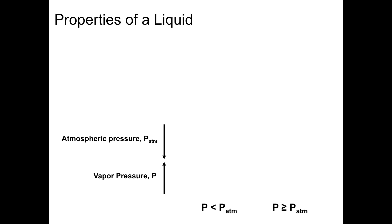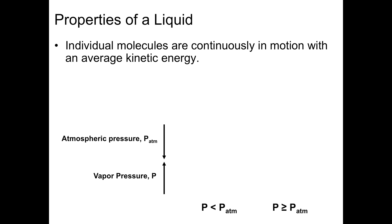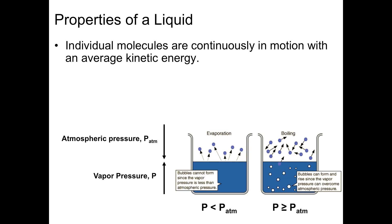Kinetic molecular theory says that individual gas molecules are continuously in motion with an average kinetic energy. Temperature is a measure of that average energy. If you have a glass of water at room temperature, at any time some fraction of the molecules will have sufficient energy to escape from the surface of the liquid and into the gas phase. This explains the phenomenon of vapor pressure. It also explains why water evaporates.